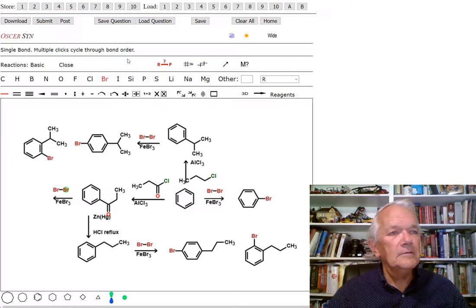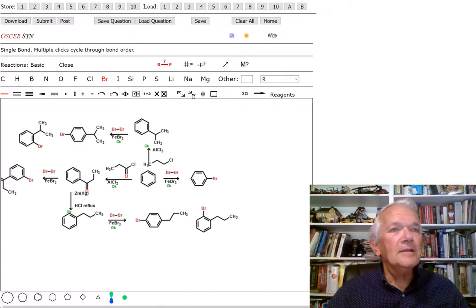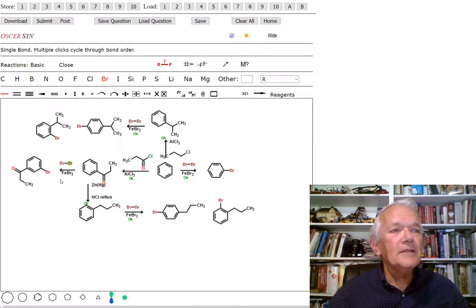Okay, come on. You can do it. Ah, there it is. And make it just a tad smaller. So this is now the meta isomer.